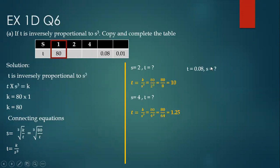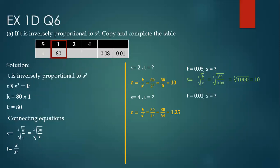Now if t is 0.08, how much is s? Use the connecting equation s equals the cube root of k upon t. So that is the cube root of 8t upon 0.08, which gives 1000. The cube root of 1000 is 10, because 10 times 10 times 10 is 1000, so write 10 here. If t is 0.01, use the same connecting equation with t as 0.01. That gives 8t upon 0.01 equals 8000, and the cube root of 8000 is 20, so write 20 here.